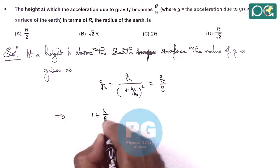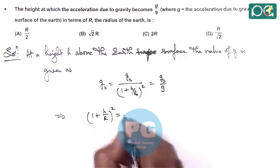So simplifying this gives (1 plus h over r) whole square is equal to... no, this is equal to 9.